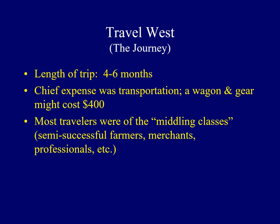In general, the trip itself took between four to six months, depending upon where one began their journey and the weather conditions. The chief expense was for transportation — a wagon, oxen, and other gear often cost approximately $400, with other supplies to be purchased as well. The very poor couldn't afford to travel, and the very rich often wouldn't be interested in making this journey, so the most common people traveling were of the middling classes.